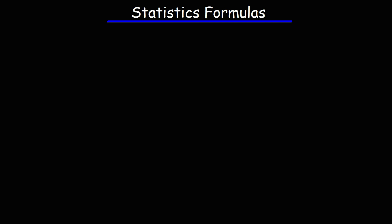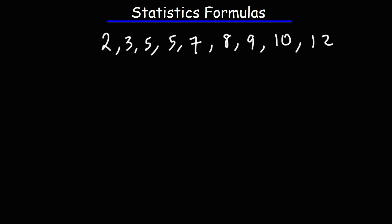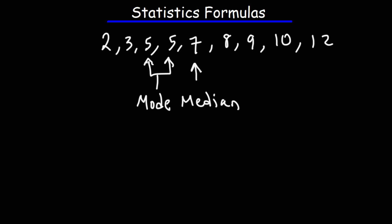In this video I'm going to go over some basic statistics formulas that you need to know for those of you who might be taking this course soon. Let's say we have the numbers 2, 3, 5, 5, 7, 8, 9, 10, and 12. The median is simply the middle number, so the median is 7. The mode is the number that occurs most frequently, so the mode is 5.